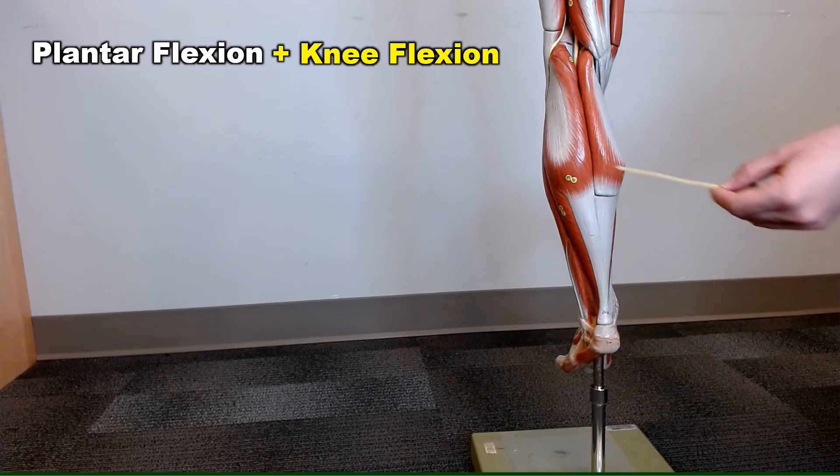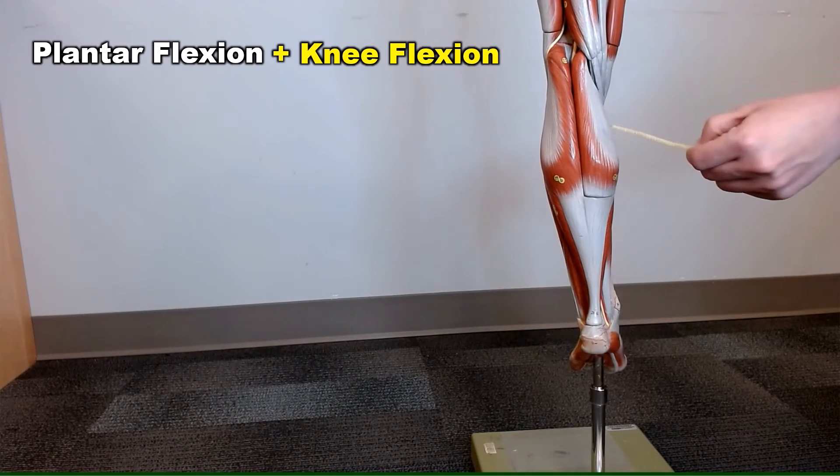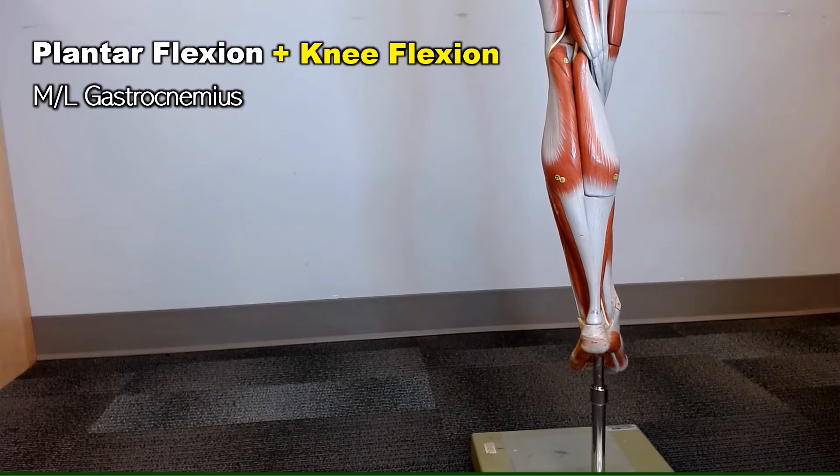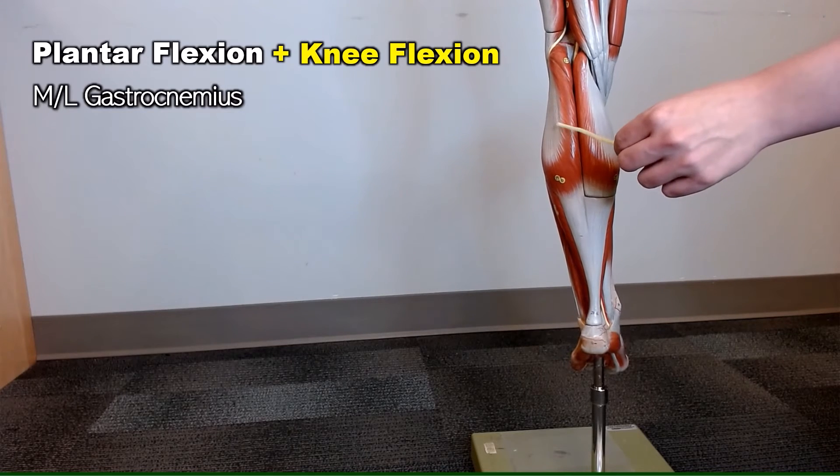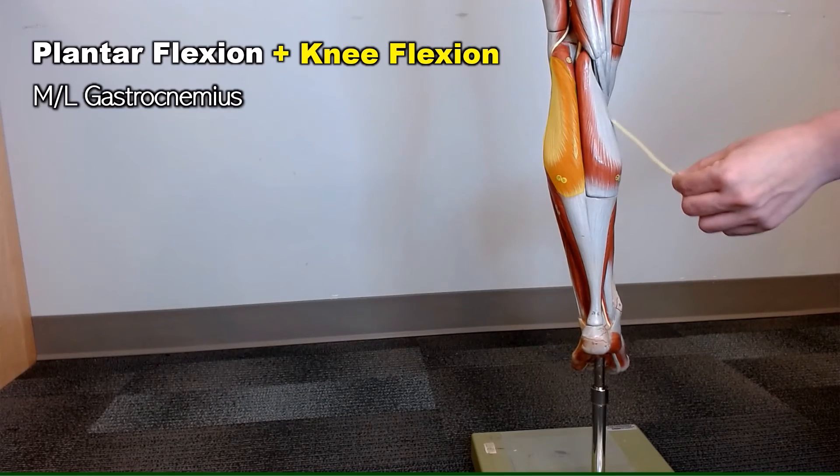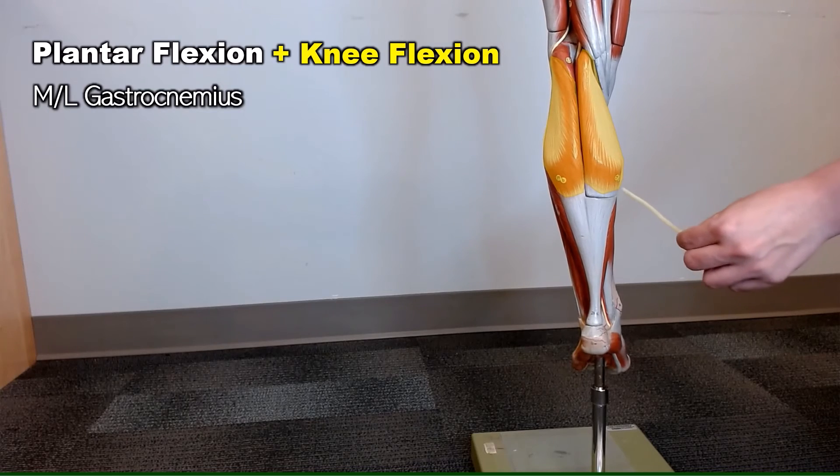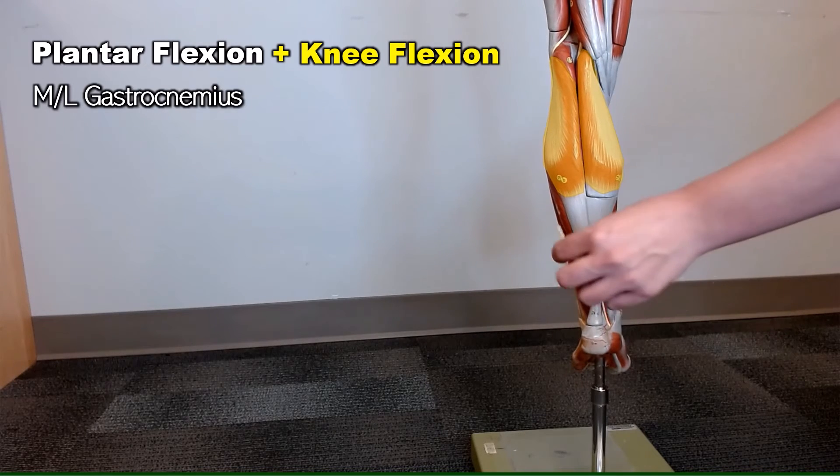This very large muscle is the gastrocnemius. The gastrocnemius has a lateral head and medial head, and it sits over top of the soleus.